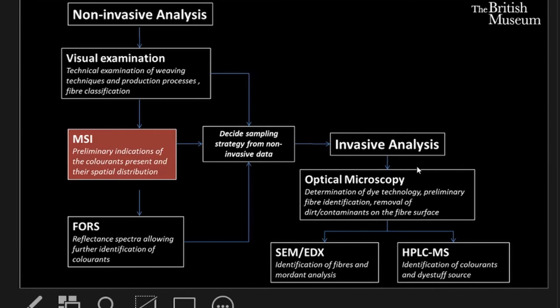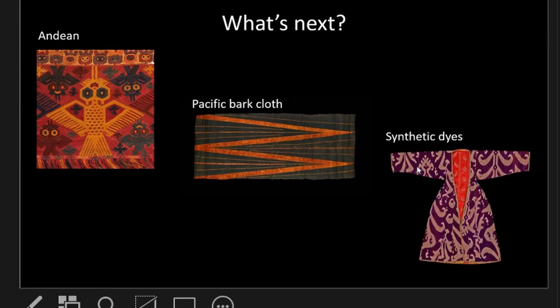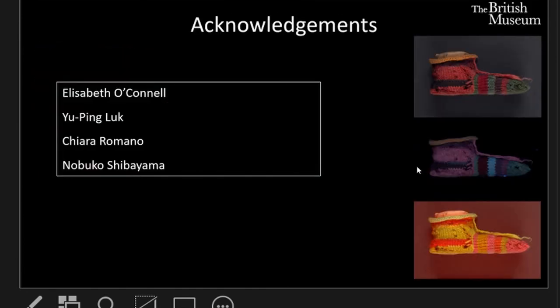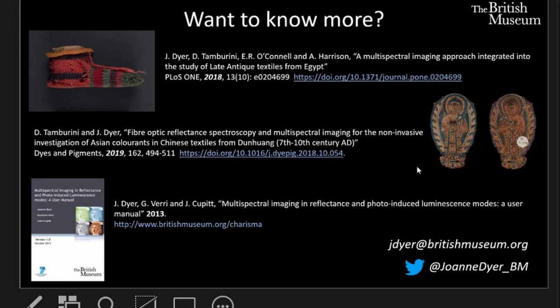Just a sneak peek at what we'll be using the protocol to look at next at the British Museum: we have an exhibition on Peruvian textiles coming up, we are continuing our Pacific bark cloth projects, and we're also looking at later silk roads and synthetic dyes. Many thanks to the curators of the two textiles collections featured, to Kiara Romano and Nagoku Shibuyama who I worked with at the Met, and please do look up the listed resources if you want more details, and feel free to get in touch with me anytime. Many thanks for your attention.